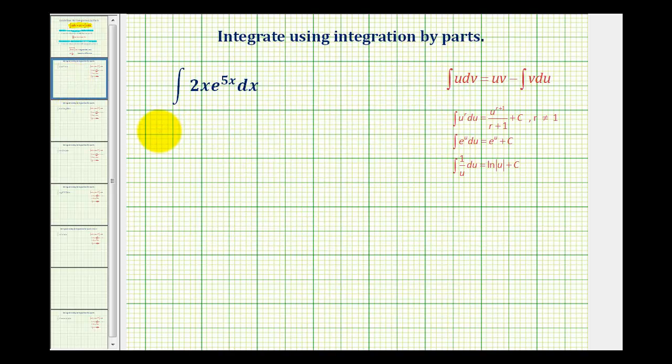We want to select u so that du is simpler. So for this example, if we let u equal 2x, du would be simpler. It would just be 2dx. Which means we'd have to let e to the power of 5x dx equal dv.